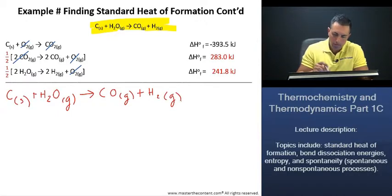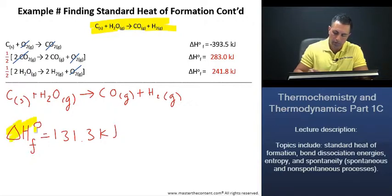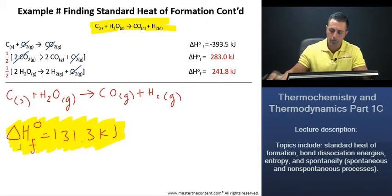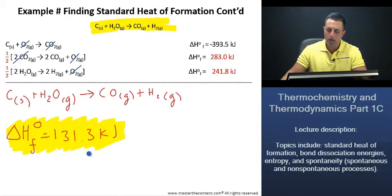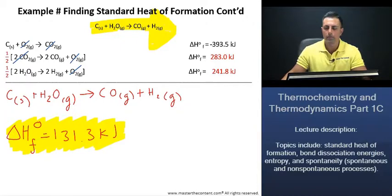What about the standard heat of formation? Well, we're a little limited for room. I'll just go ahead and write it down here. That's just going to be 131.3 kilojoules. That is our answer. As we can see, our reaction is going to be endothermic. This value is telling us that 131.3 kilojoules of energy is needed for our reaction to proceed to the right. We're now ready to move on to our next slide.